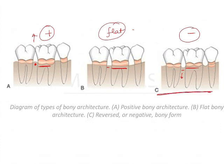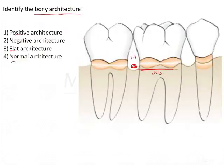In the given image, we have something similar to negative architecture. The interdental bone shows a concavity, and its highest point is below the radicular bone — so this is negative architecture, option number two.